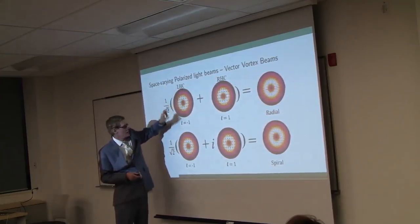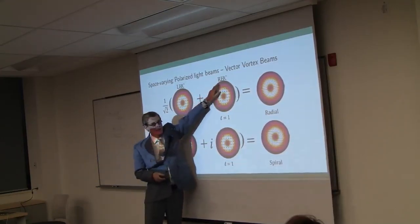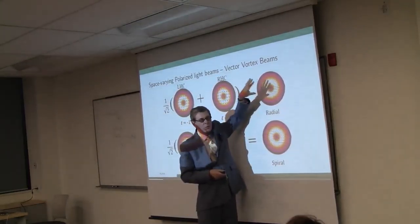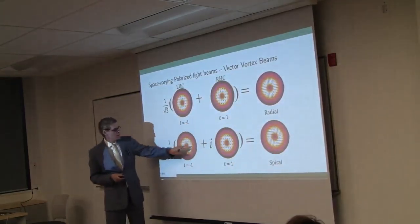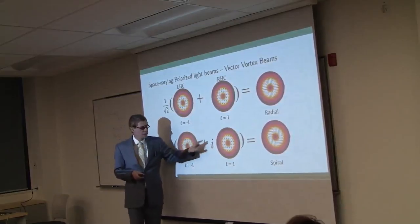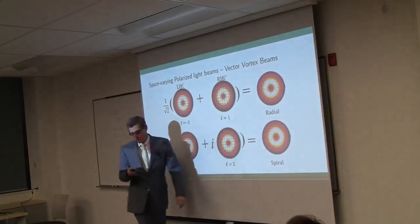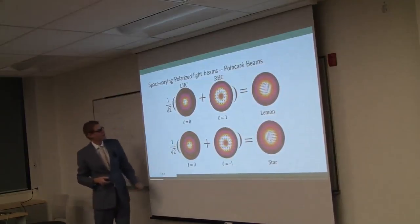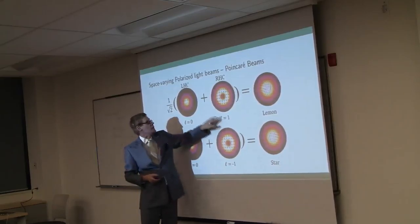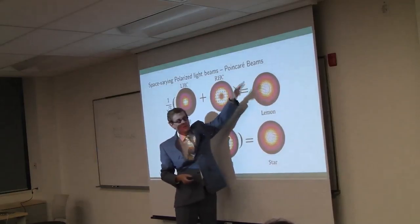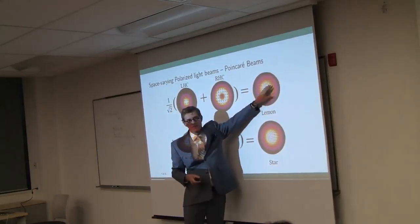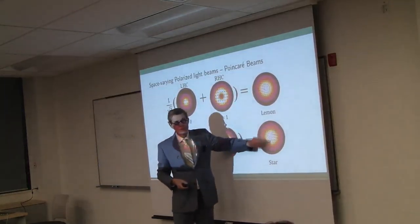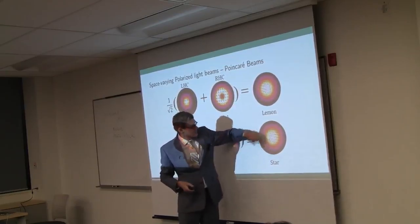So let me give you an example. Let's say you have left-hand circular light with an OAM of minus one, and you add it to right-hand circular light with an OAM of plus one. And if you just go through the calculation, you'll end up with a radially polarized beam of light. If instead you phase shift one by 90 degrees with respect to the other, you end up with a spiral polarization of the beam of light. So here we had L and minus L. But of course, there are other possibilities. You can take L equals zero and mix it with L equals plus one.